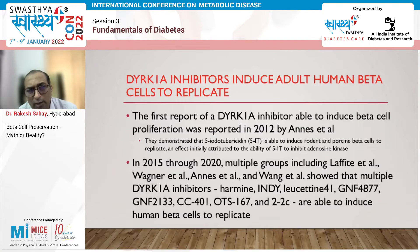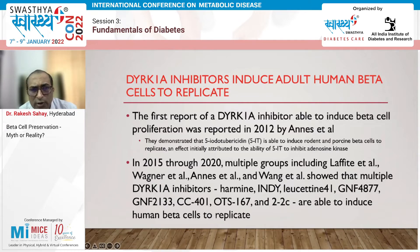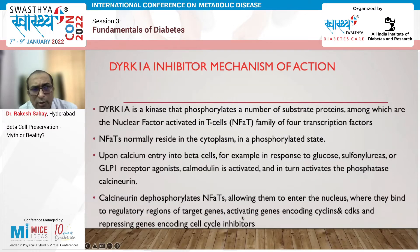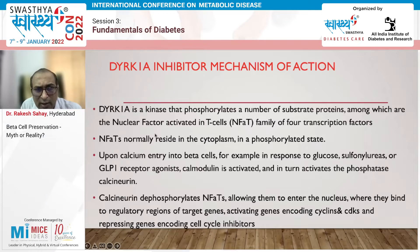Coming to DYRK1A inhibitors and how they produce beta cell regeneration — first studied in 2012 by Annis et al., and subsequently between 2015 and 2020, multiple groups studied different inhibitors like harmine, INDY, and leucettine-41, showing these are able to induce human beta cells to replicate. DYRK1A is a kinase that phosphorylates substrate proteins including the NFAT family of nuclear transcription factors.